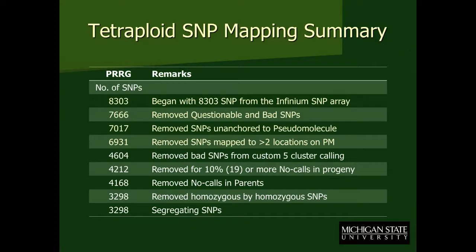When we did this initial general filtering and then looked at the custom 5-cluster calling, that filtered it down to 4,604. We used 10% as a cutoff for no-calls in the progeny — so if more than 19 progeny did not get a call on a SNP, it was removed from the analysis. That took out about 400 different SNPs. If the parents had a no-call, we removed those as well, though that didn't remove too many.